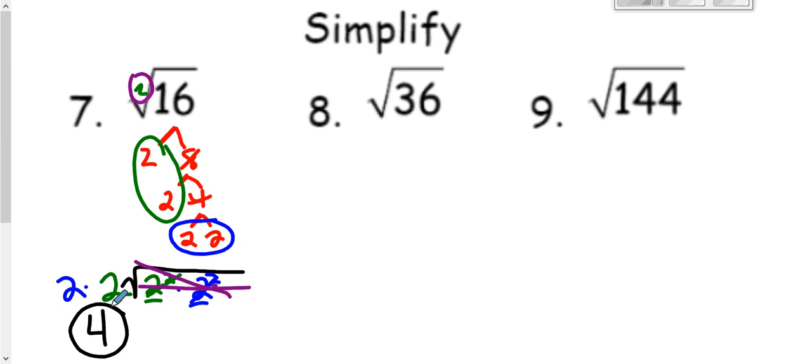Let's do that in the next one with the square root of 36. So again, we're going to start by breaking this down into its prime factors. So I like 9 times 4. The 9 will break down to 3 times 3. And the 4 will break down to 2 times 2. There was also 2 times 18, 3 times 12. Any of those will work. 6 times 6. Any of that will work. You will get down to the same prime factors.